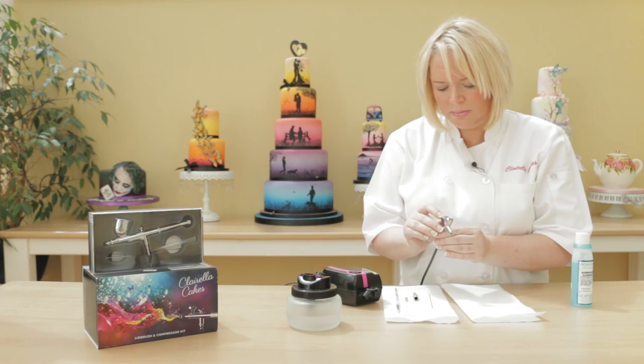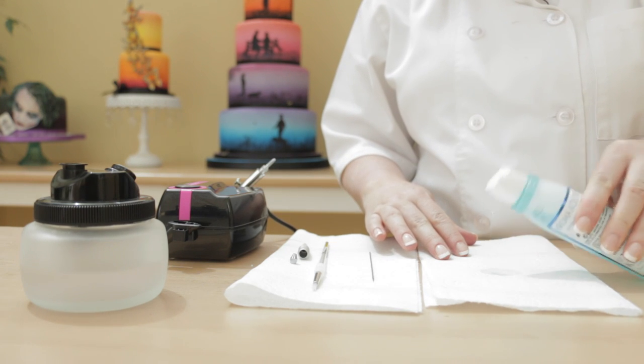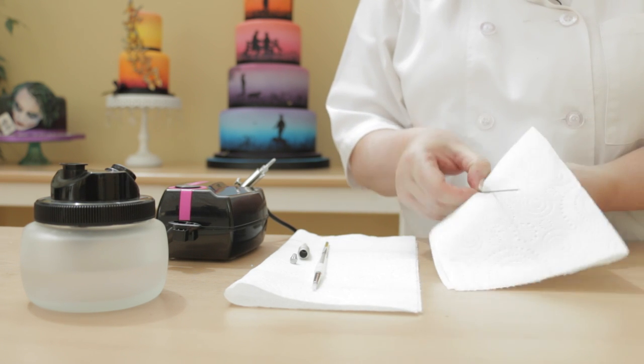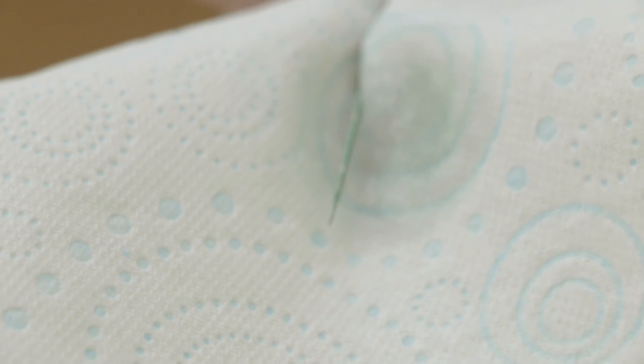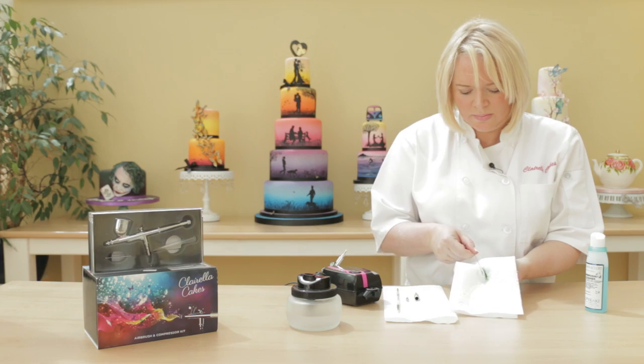Place the airbrush back into the holder on the side of the compressor. Take a small area of paper towel with a few drops of airbrush cleaner, carefully wipe the needle gently turning to ensure the entire needle surface has been cleaned. Take great care not to damage the needle as this is very delicate.